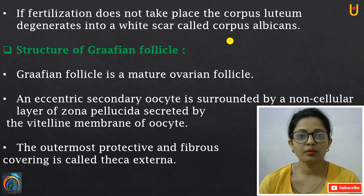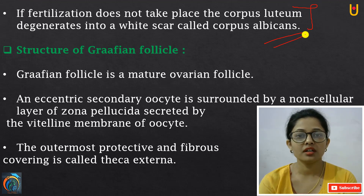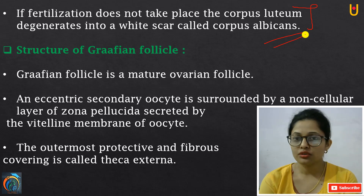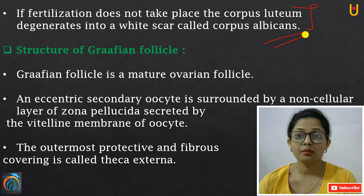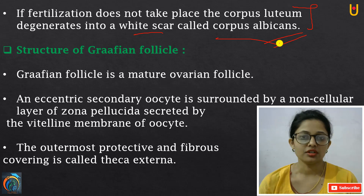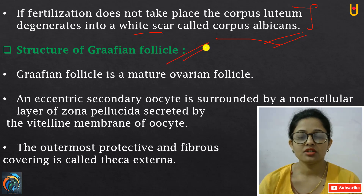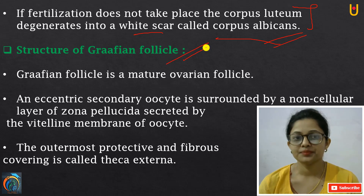Last time, I covered the slide in front of corpus luteum — which is not fertilization — which is the Graafian follicle. It degenerates into corpus luteum, and then corpus luteum degenerates into the white scar corpus albicans, as I told you in the last video. Today, we are going to start the structure of the Graafian follicle.